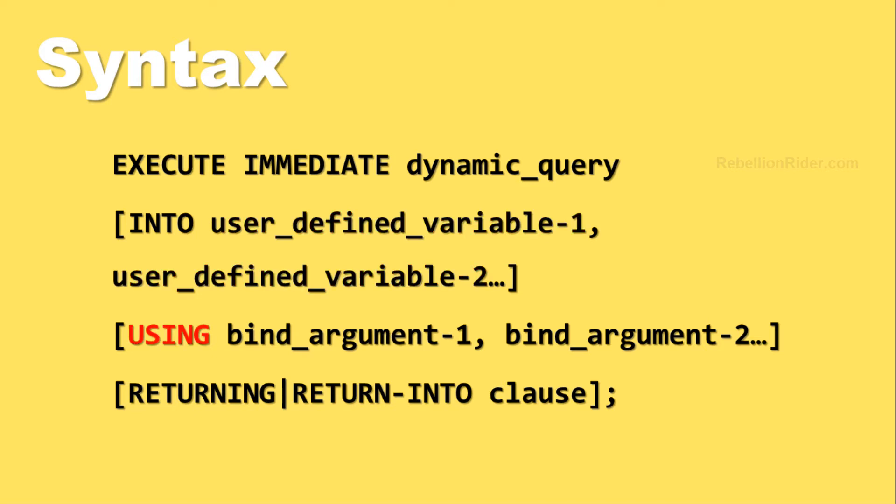In case you have used a bind variable in your dynamic query, the USING clause will enable you to specify the values for the bind variable, which will get substituted during runtime accordingly. This is again an optional clause. Then we have the RETURNING INTO clause, which is sort of opposite to the USING clause. Where in the USING clause we are supplying values to the dynamic query, here in the RETURNING INTO clause we get the values returned by the dynamic query and store them into the specified list of bind arguments.